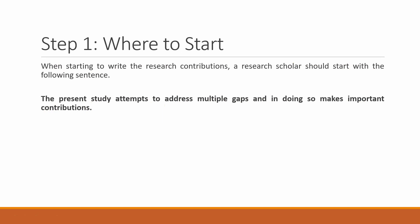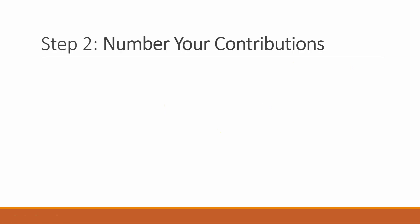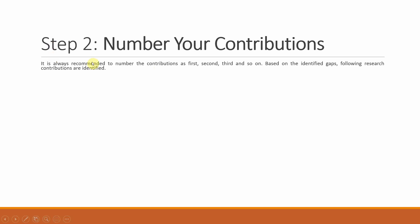Those are the gaps that this study is addressing, and while addressing these gaps, you are making these contributions. Next, you have to identify or write your contributions in the form of numbers — first, second, third, fourth, and so on. I recommend there should be at least two to three contributions. It's always recommended to number your contributions. Based on your identified gaps, the following research contributions are identified.